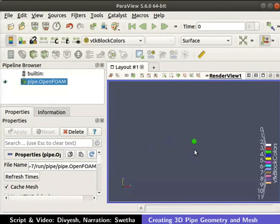Now you can see pipe geometry in the layout window. You can rotate geometry in the layout window by pressing the left mouse button and dragging.